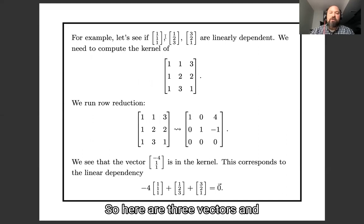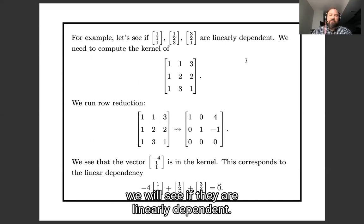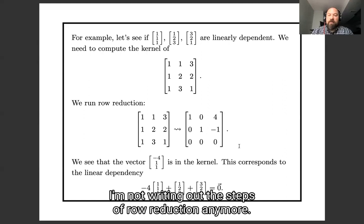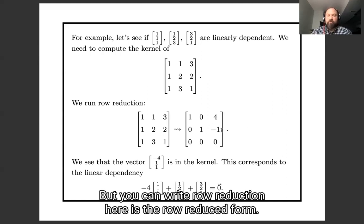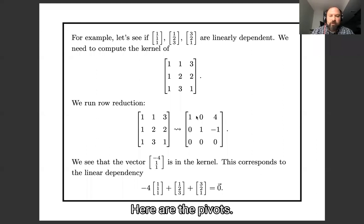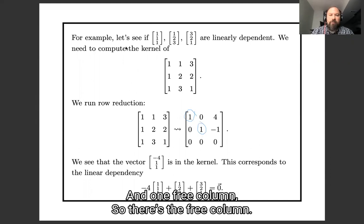Let's see an example. So here are three vectors and we'll see if they are linearly dependent. Here's our matrix. Here's row reduction. I'm not writing out the steps of row reduction anymore, but you can run row reduction. Here's the row reduced form. And we see there are two pivot columns. Here are the pivots. And one free column.